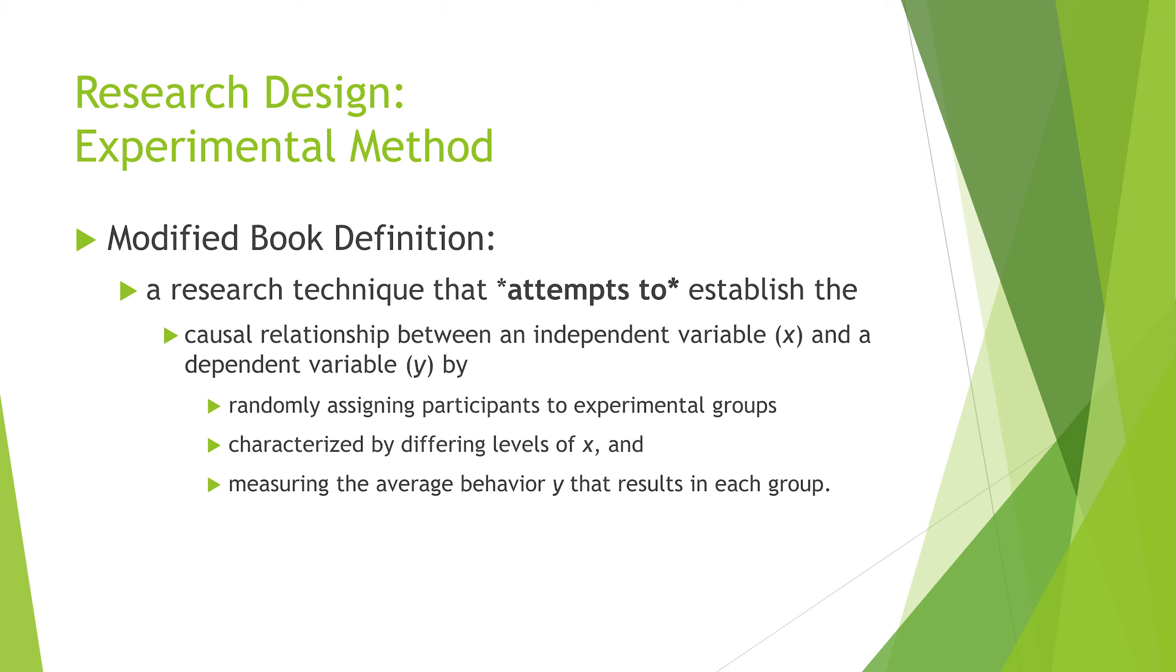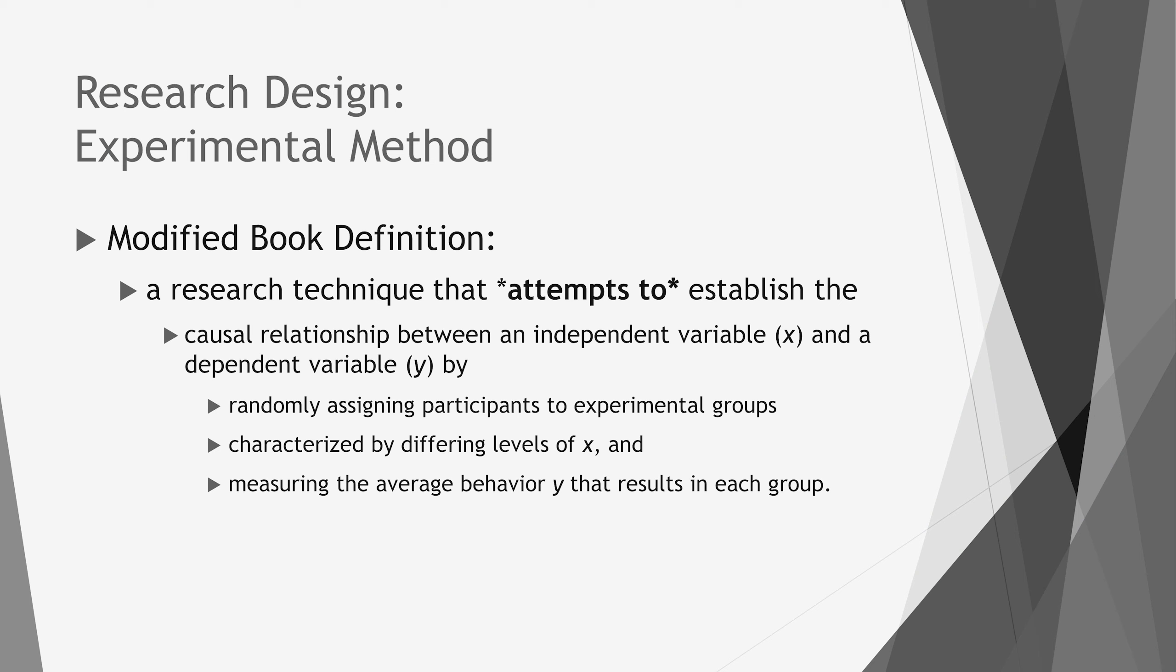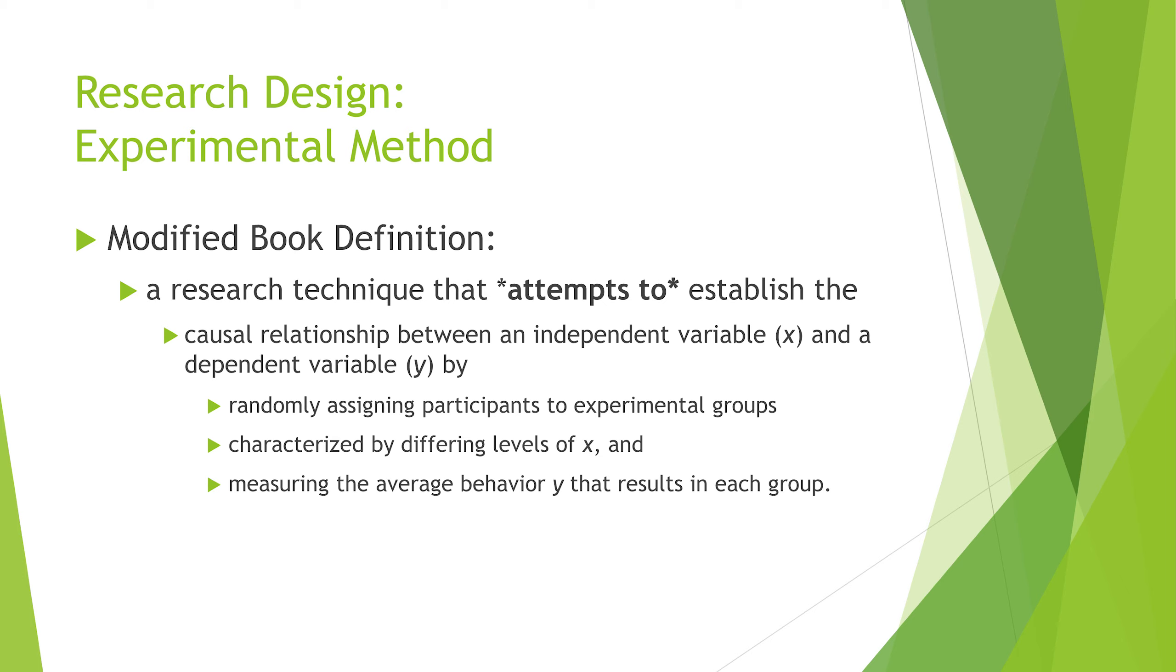Next is kind of the bread and butter of most of psychology. I'm a rare exception—I don't really run experiments. But the idea is that experimental method is a research technique that attempts to establish the causal relationship between an independent variable x and a dependent variable y by randomly assigning participants to experimental groups. The idea is to examine how they differ on their levels of x. Then you measure the average behavior y that results from each group. So you manipulate whatever the independent variable is, and then you see if there are differences in your outcome.